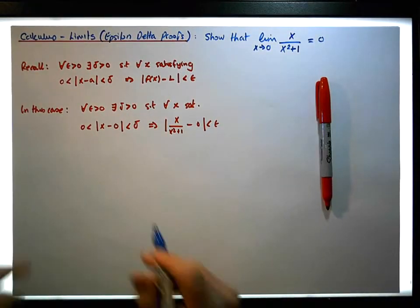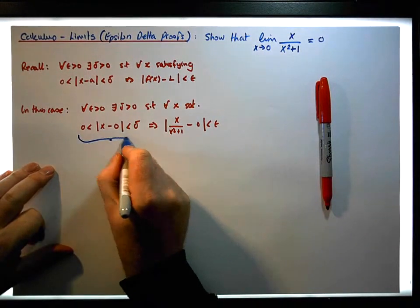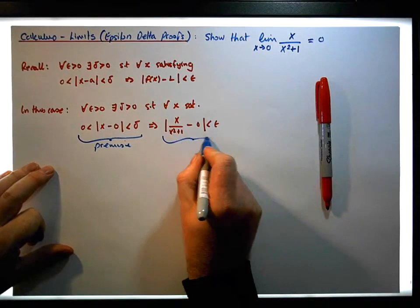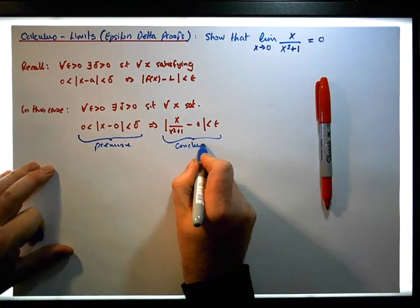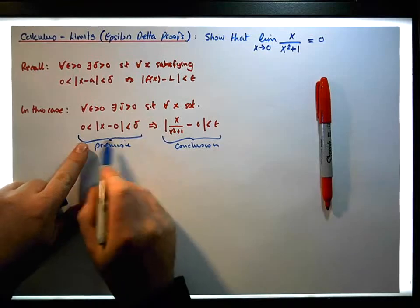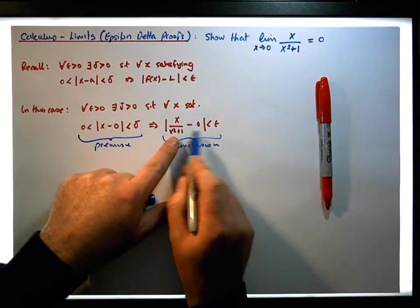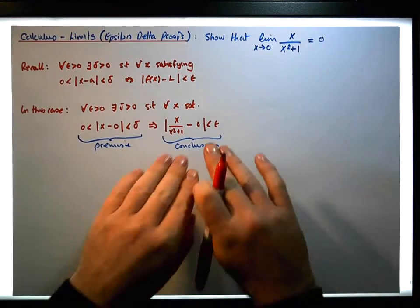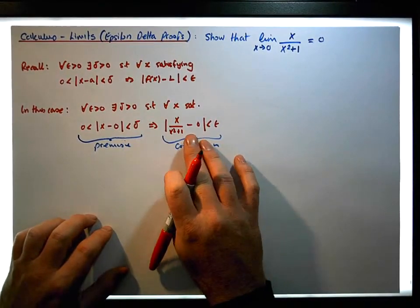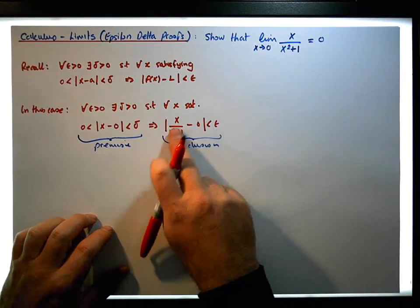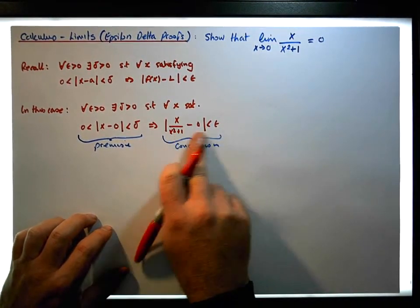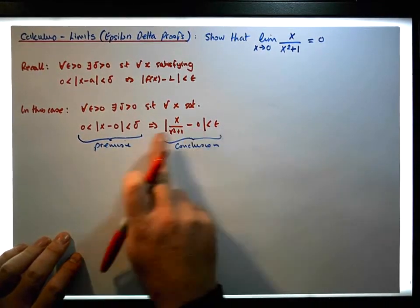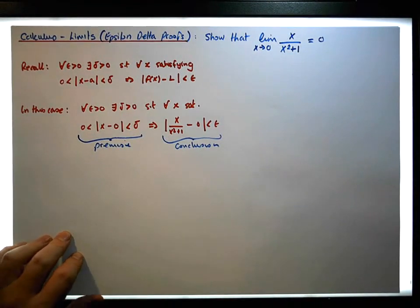So in this particular case, we have a premise and a conclusion. Here's our premise of the implication, and here's our conclusion. What we'd like to do is find some delta so that when the premise is satisfied, it implies the conclusion. Like in all of our previous examples, we'll start with the conclusion — because that's where we want to get to — and see if we can reduce it down into something that looks like the premise, which will then leave us with an appropriate delta.